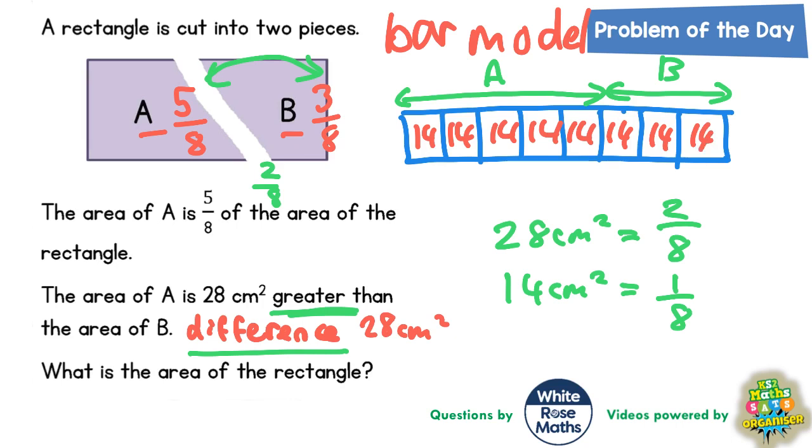Now it basically says what is the area of the rectangle? Well the simple answer to this would be to do eight lots of 14 because there are eight pieces all worth 14. Eight times four is 32, put the two in, carry the three. Eight times one is eight, plus the three is 11. So your final answer is 112 centimeters squared.